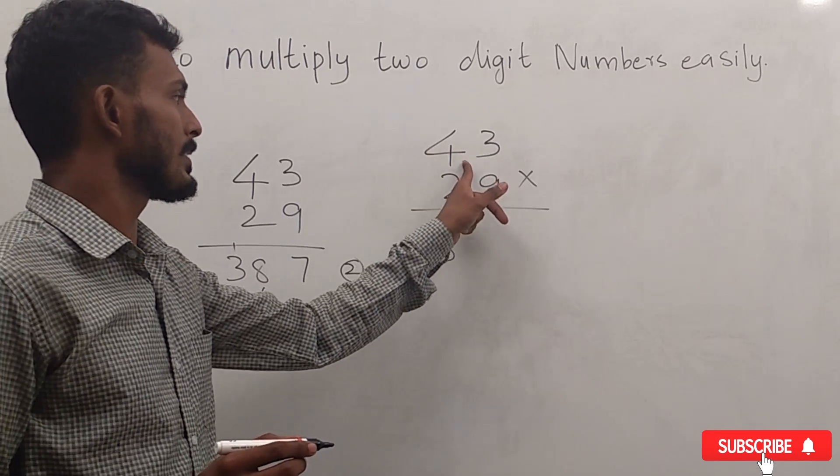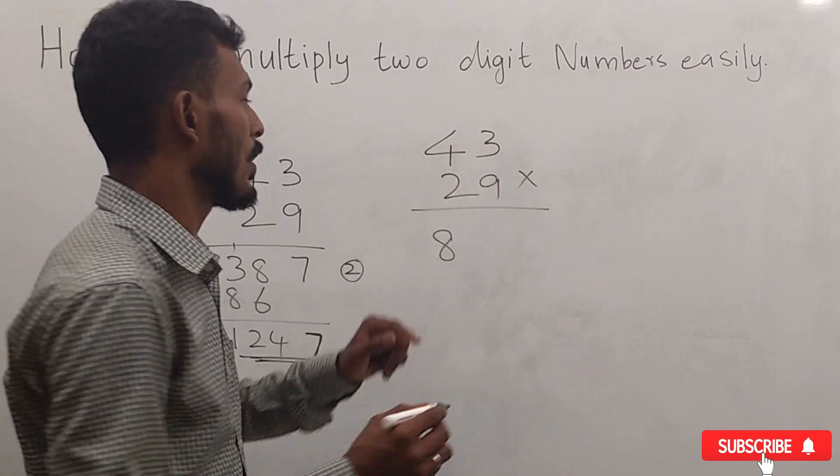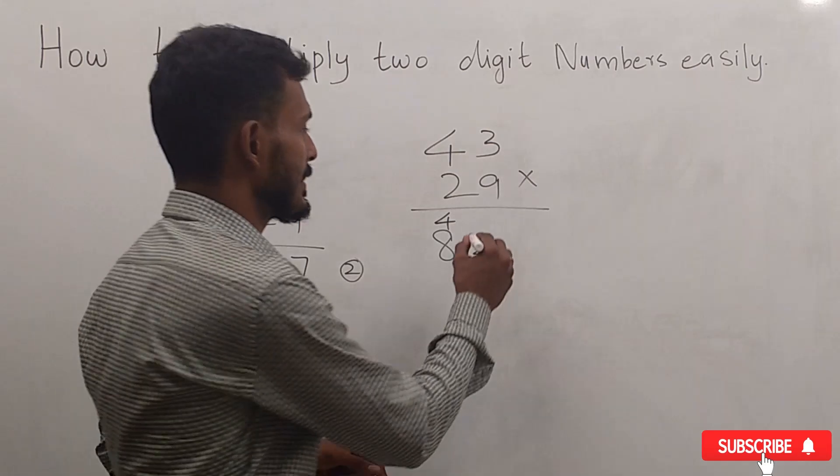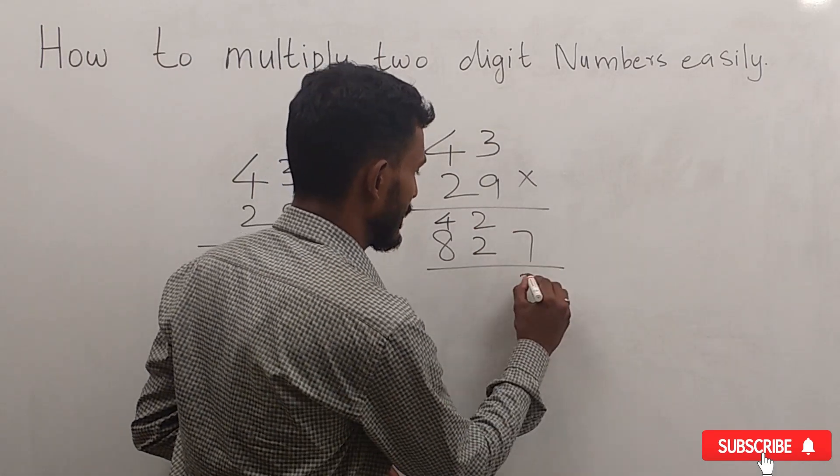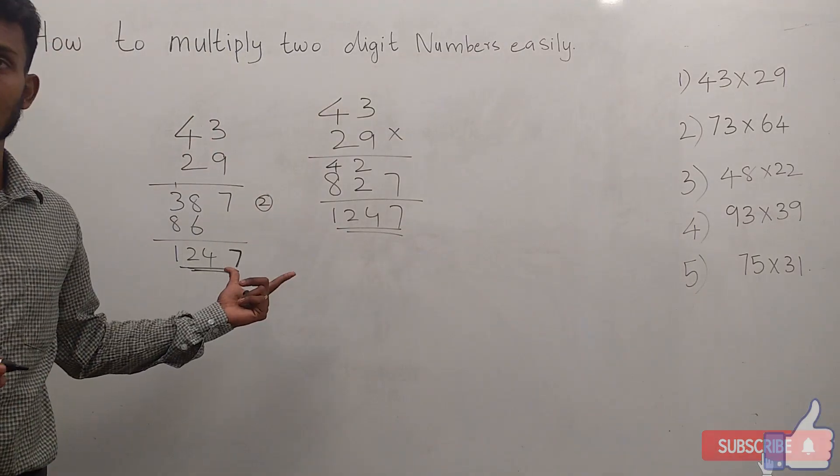Then these two things: 4 × 9 = 36, plus 2 × 3 = 6, gives us 42. Then 3 × 9 = 27. 7, 4, 1, 2. The answer is the same.